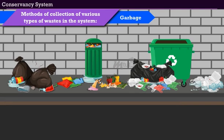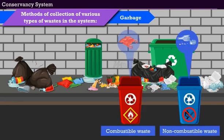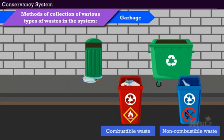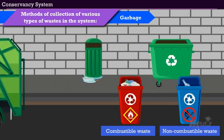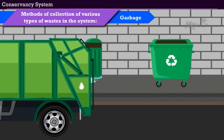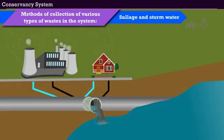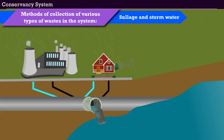Second, Garbage: garbage is a waste matter of both non-combustible as well as combustible types. It is collected separately in dustbins and conveyed on hand carts or garbage vans once or twice a day. Last, Sullage and Stormwater: sullage water and stormwater are collected and conveyed separately in closed or open gutters.